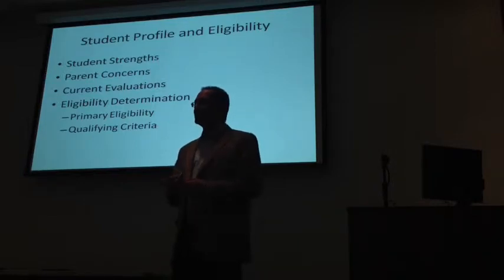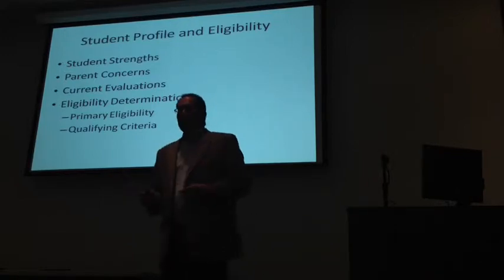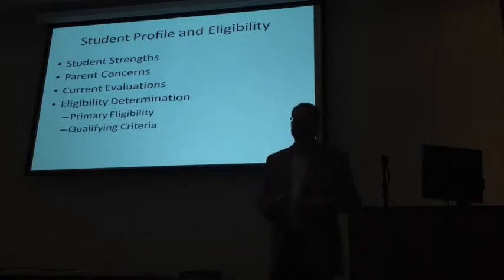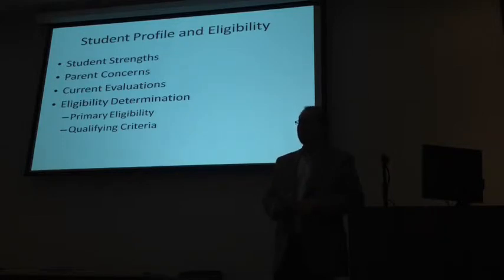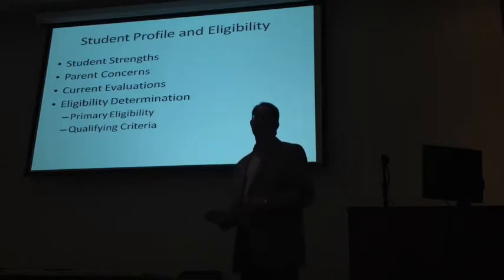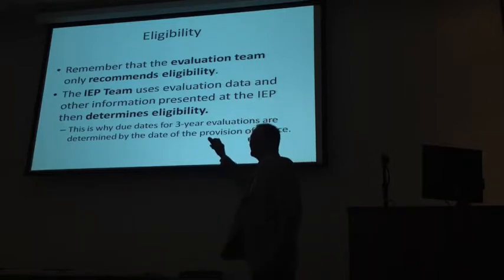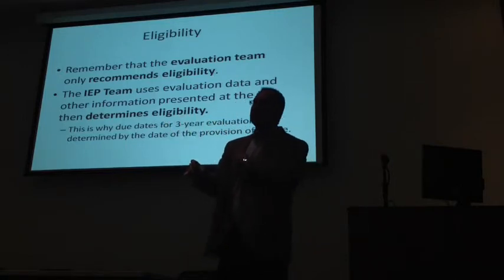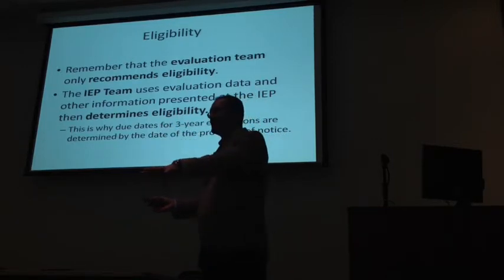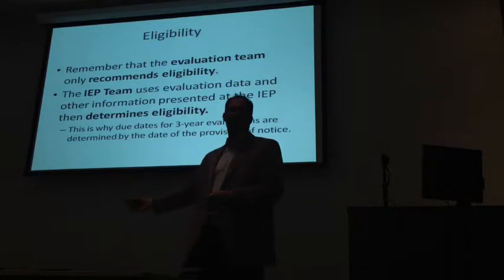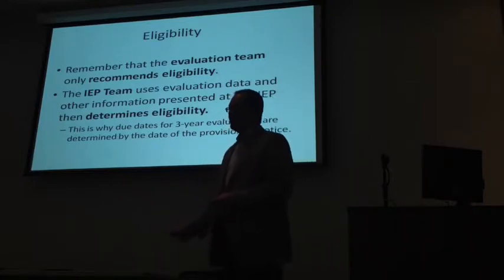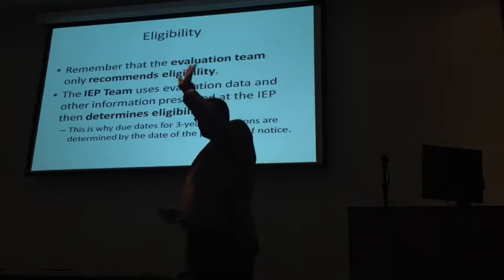Eligibility determination is done at the IEP meeting, not prior to it. Even though evaluations are done, those are all just data points that go into determining eligibility. The actual determination happens at the IEP team meeting with input from all members. That's been contentious — we're probably going to do more training on what's called predetermination. When you have three-year re-evaluations, the 36-month timeline starts from the IEP meeting — that's when the offer of FAPE, or Free Appropriate Public Education, is made. That's in IDEA as well as the Michigan Administrative Rules for Special Education.